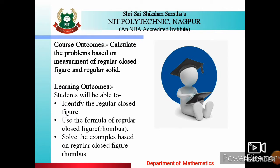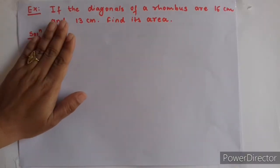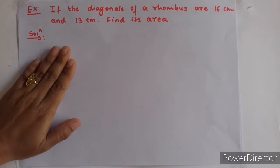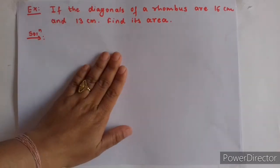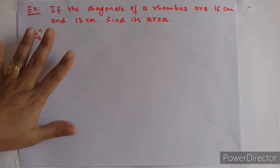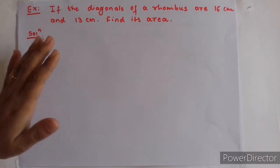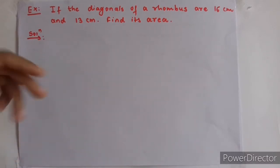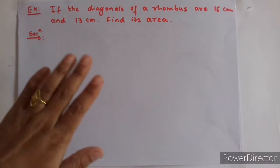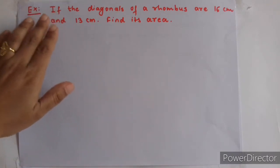You can find the area and also calculate the values of the diagonals. So let us start today's class on Examples on Regular Closed Figure. As you have seen in previous videos, we are solving examples on regular figures — finding area, finding sides.